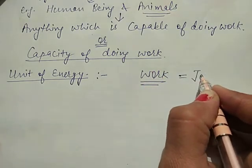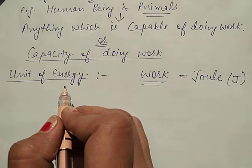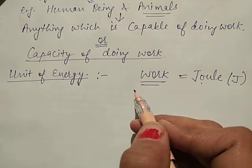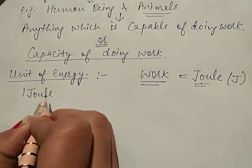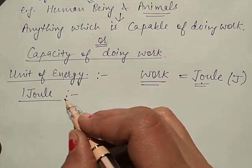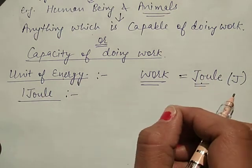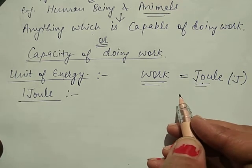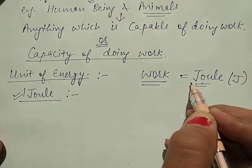The unit of work is joule, and it is denoted by capital J. So the unit of energy is also joule. Work and energy both have the same unit. One joule means this body has the capacity to do one joule of work. Joule is the SI unit of work and energy.